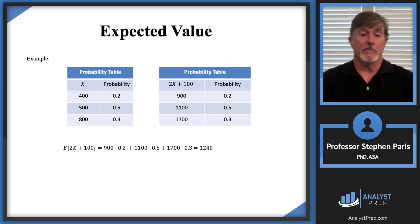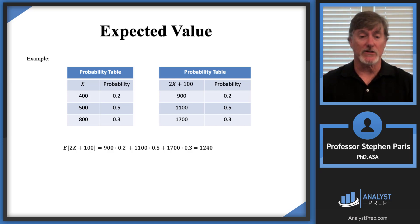The expected value is again just a sum product: 900 times 0.2 plus 1100 times 0.5 plus 1700 times 0.3, giving us 1240. That's how we calculate the expected value of 2X plus 100.